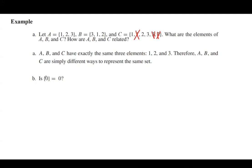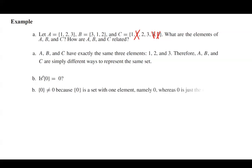This question asks: is the object on the left-hand side, which is a set, equal to the number on the right-hand side, which is zero? The answer is no. The object on the left-hand side is simply a set. The object on the right-hand side is a number. They are different from each other, so these two objects are not mathematically equal to each other.